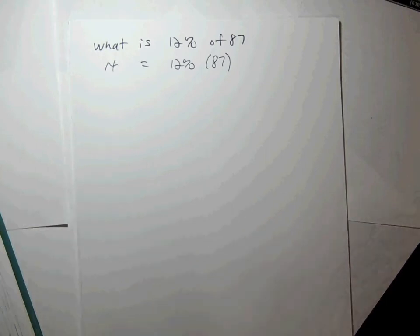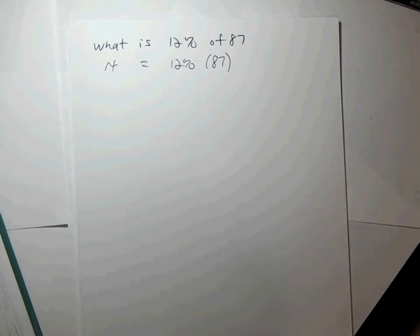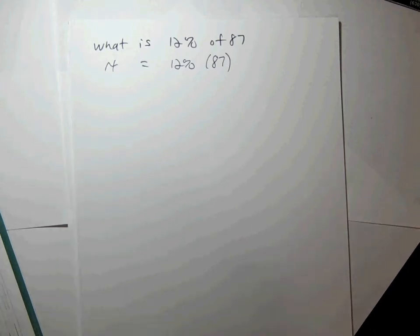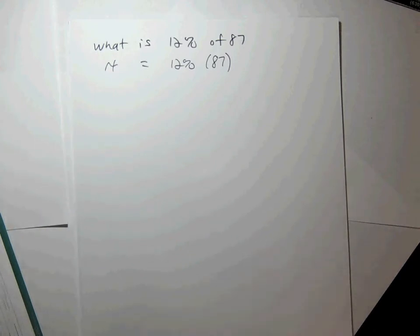So now we're going to formally tackle that algebra. Variable notation — the X's, Y's, Z's — they represent numbers. At the present time we don't know what the number is, so we just give it a name like X, Y, Z, A, B, C. We can pick whatever letter we want if there are no guidelines.